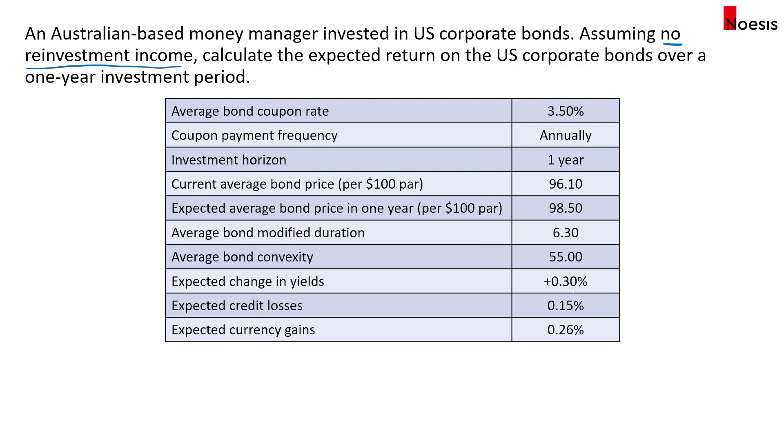Expected credit losses are 0.15% and there is an expected currency gain of 0.26%. So since it's a gain, it means that the expectation is that U.S. dollar will appreciate versus Australian dollar.